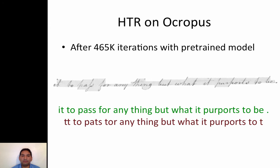Here's another example. The more iterations we give it, the more it can learn. However, this training process is very expensive — it took more than a week to train the model, and even then it wasn't perfect and needed more iterations.